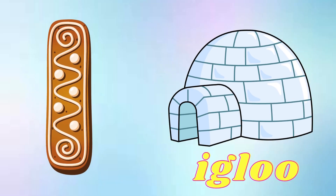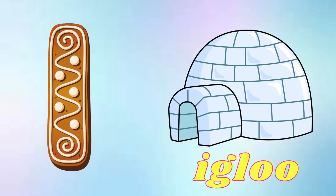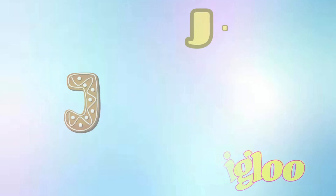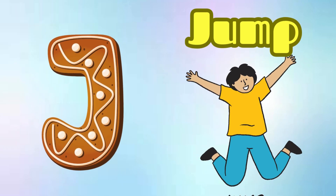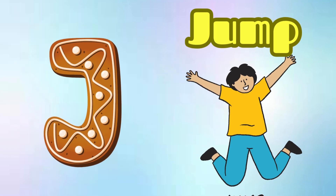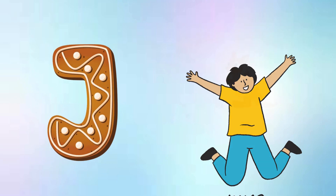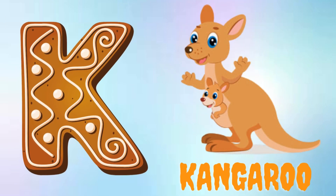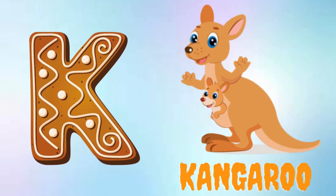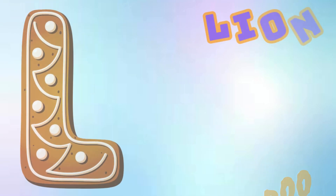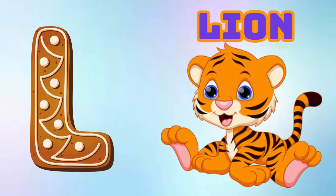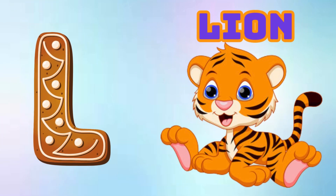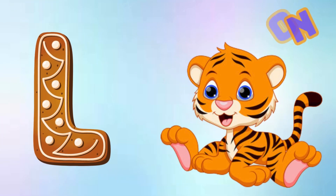I is for Igloo, I-I-Igloo. J is for Jump, J-J-Jump. K is for Kangaroo, K-K-Kangaroo. L is for Lion, L-L-Lion.